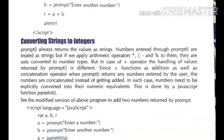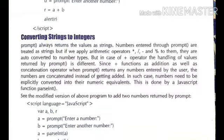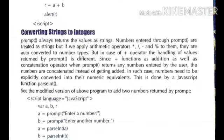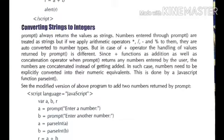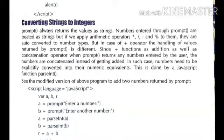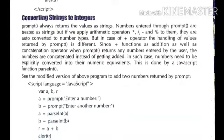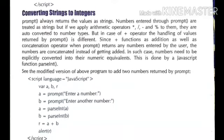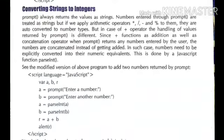For example, declare three variables: var a, b, r. a equals to prompt('Enter a number') — the prompt function asks the user for a number stored in a. Similarly, b takes the second number from the user. To declare an integer value, the parseInt function is used. The value stored in b is also declared as integer type, and r equals to a plus b. The alert function then prints the result.